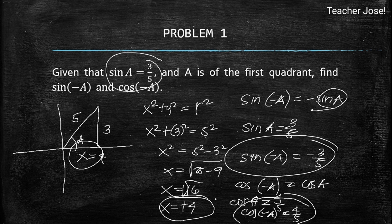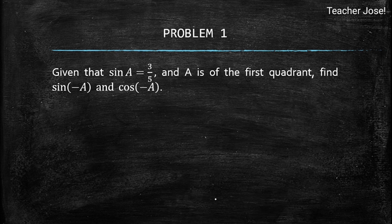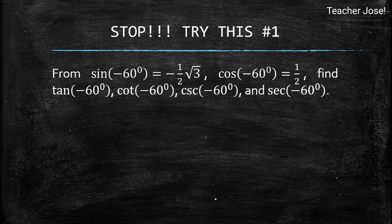Please try this one at home — Stop and Try number 1. Given that sine negative 60 degrees equals negative one-half square root of 3 and cosine negative 60 degrees equals one-half, find tangent negative 60 degrees, cotangent negative 60 degrees, cosecant negative 60 degrees, and secant negative 60 degrees. We are done with Stop and Try number 1, moving on to problem number 2.